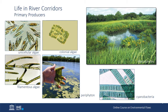Macrophytes are another group of primary producers. They're aquatic flowering plants that grow where substrate, nutrient, and water clarity conditions are right. They provide habitat for other species, especially insects and algae. As important structural features in streams and rivers, macrophytes also influence river hydraulics, most commonly reducing flow velocities. As we learned in the last unit, velocity strongly influences the relative amount of erosion and deposition in a river reach. So by reducing velocities, macrophytes increase the deposition of sediments, thereby contributing to the creation of substrates they need themselves in a positive feedback mechanism.